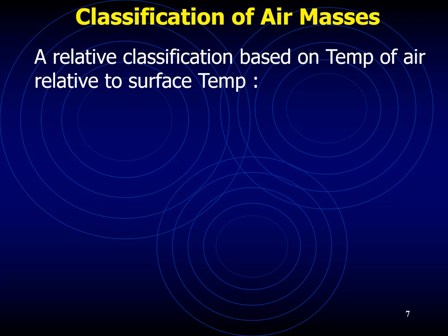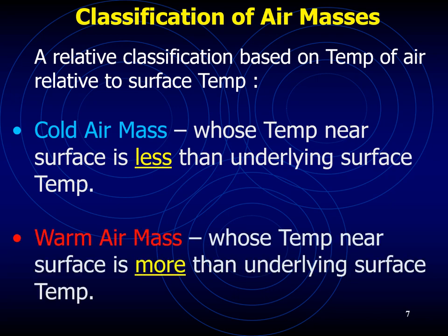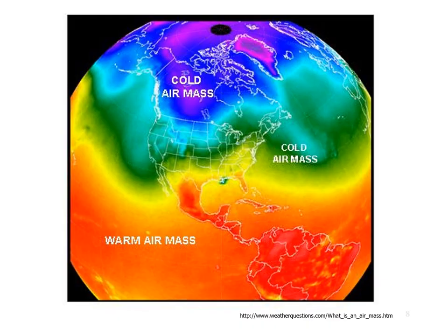Air masses can also be classified based on the temperature of the air relative to the land or sea surface temperature. A cold air mass is one whose temperature near the surface is below the temperature of the underlying surface, while a warm air mass has a temperature near the surface above that of the underlying surface. Cold air being warmed from beneath tends to be thermally unstable, with cumulus-type clouds and good visibility except in showers.